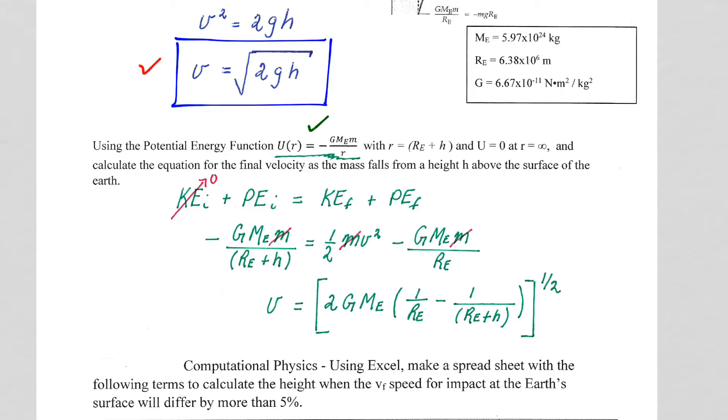Again, we are letting it fall from rest, so kinetic energy initial equals zero. Now, we cannot just ignore the potential energy final or let it equal zero, because our potential energy final is based on the center of mass to center of mass distance. So we now have the radius of the Earth is our center of mass to center of mass distance for the final value when it strikes the Earth. So we are starting it at a height H above the Earth. Again, the M's are going to cancel out for us, so we see our M's all cancel out.